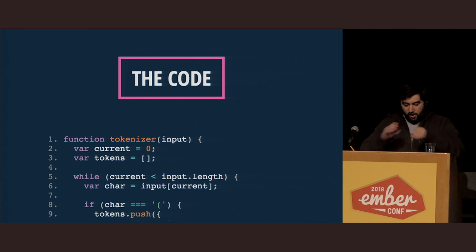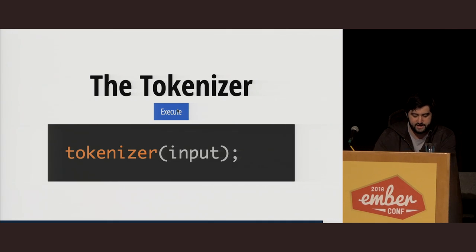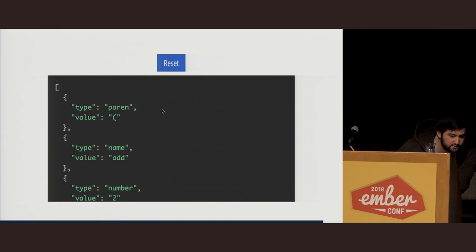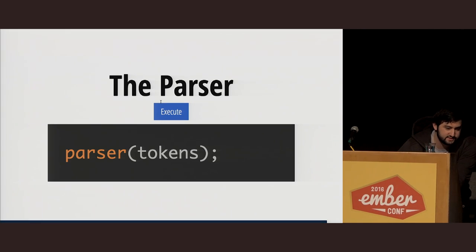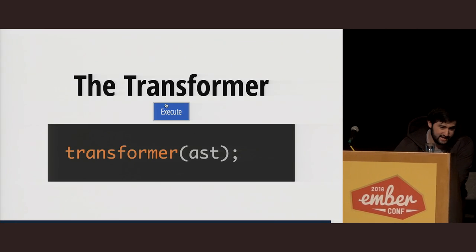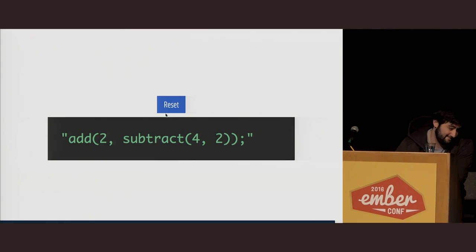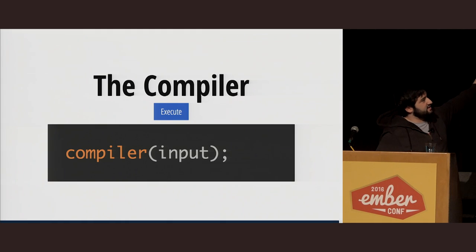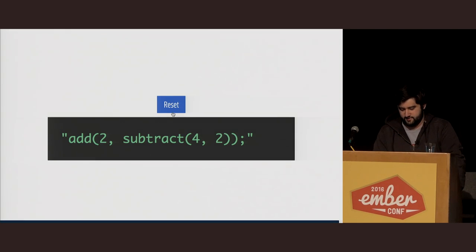And that's it — that is all of the code in our compiler. But let me prove that it works. The tokenizer will take our string and generate tokens — and boom, it does. The parser will take our tokens and generate a new AST — and it does. The transformer will take our generated AST and turn it into a new AST. The code generator will take the new AST and generate the output, and it does. Finally, running it through all of them from beginning to end — tokenizer, parser, traverser, transformer, code generator — it generates our code. And that is it. Thank you guys.